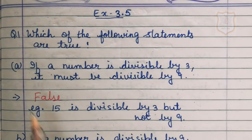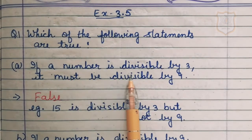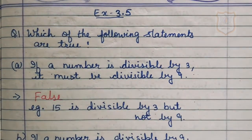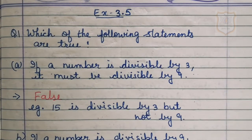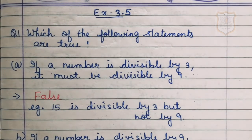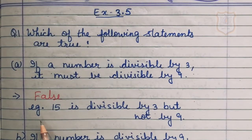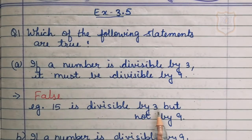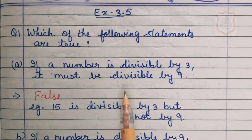Part A of question number 1: if a number is divisible by 3, it must be divisible by 9. Here we have to state whether a number divisible by 3 is also divisible by 9. The answer is false. For example, 15 is divisible by 3 but not by 9, so the statement is false.